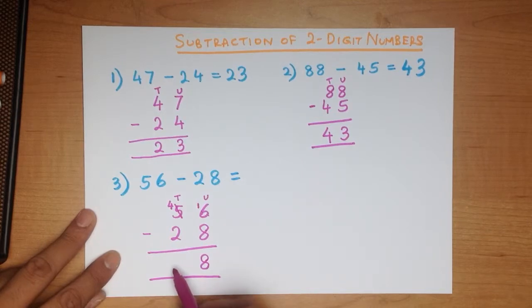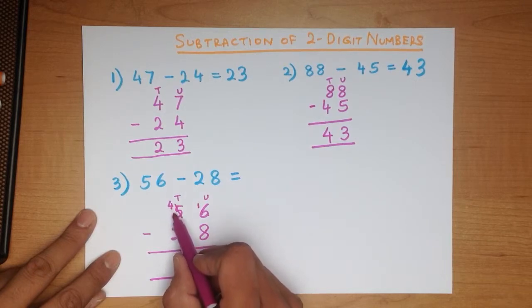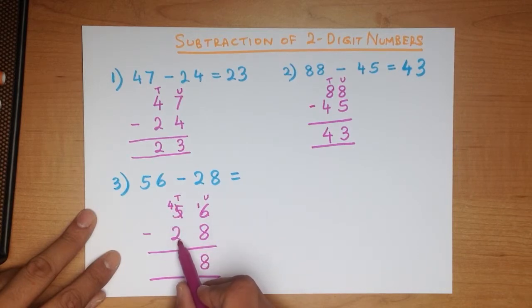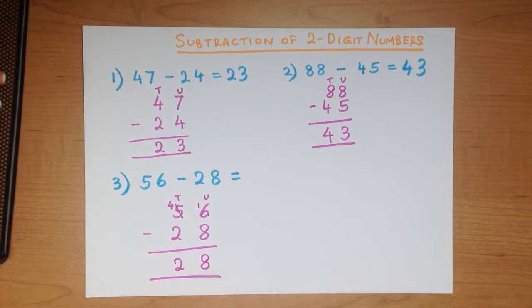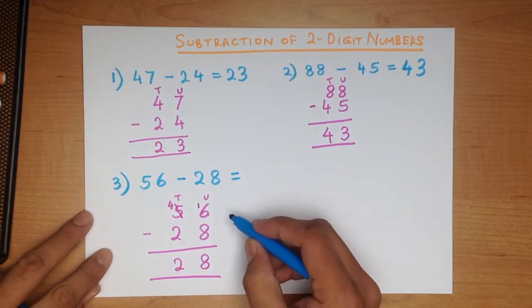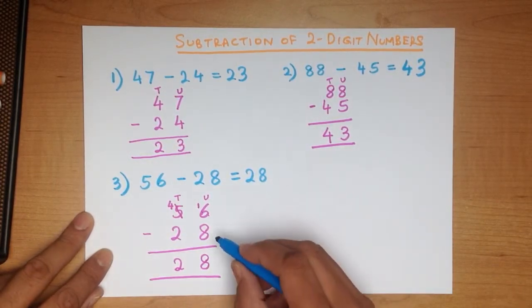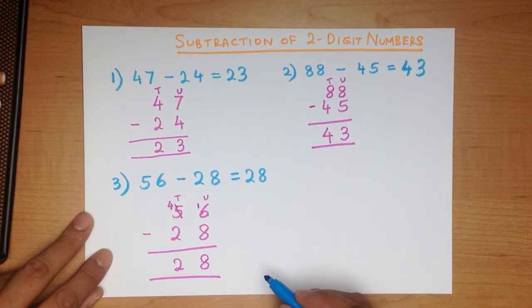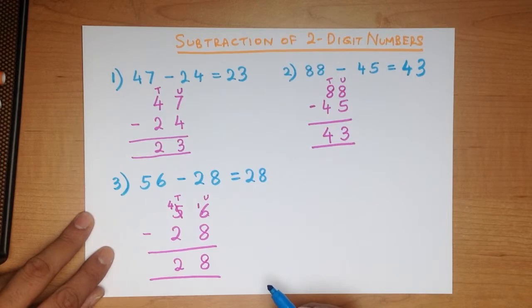We now subtract the tens column. We're not subtracting 5 anymore — we're now doing 4, because we have taken 1 and moved it to the units. So the tens column: what is 4 minus 2? That's right, it's 2. And that is our answer — 56 minus 28 is 28. That looks a little bit complex, but once you get the hang of it, it's very easy and a very useful method when calculating slightly larger numbers.